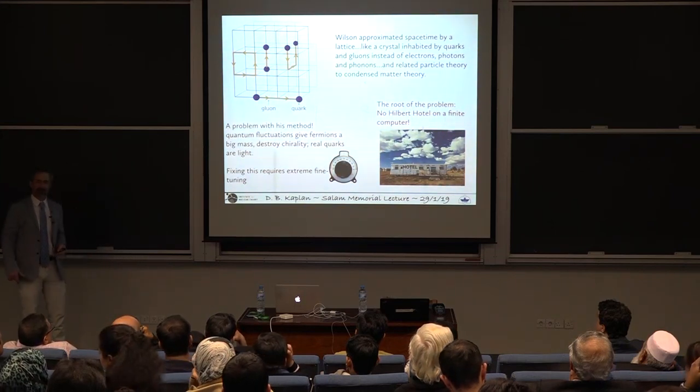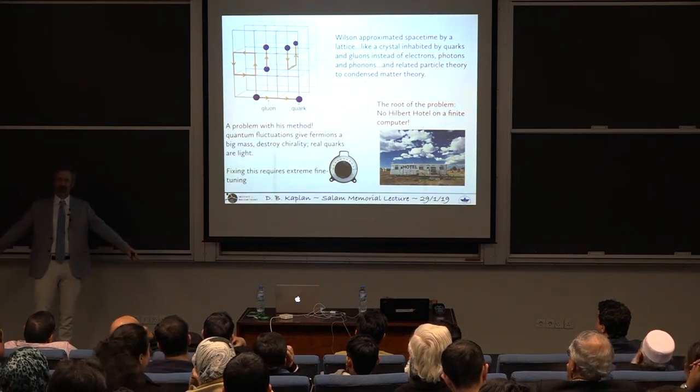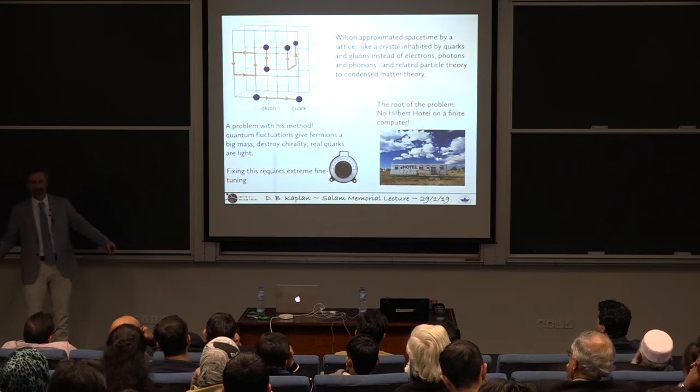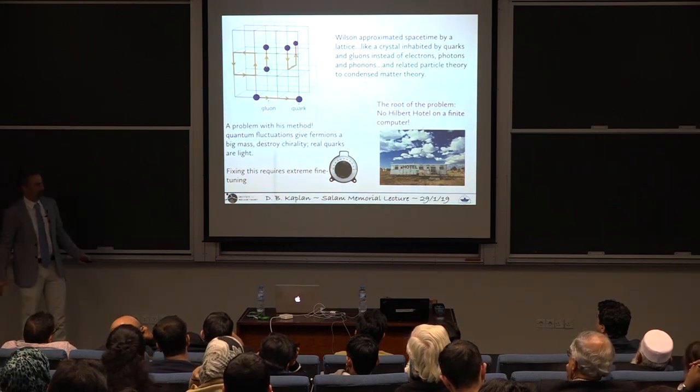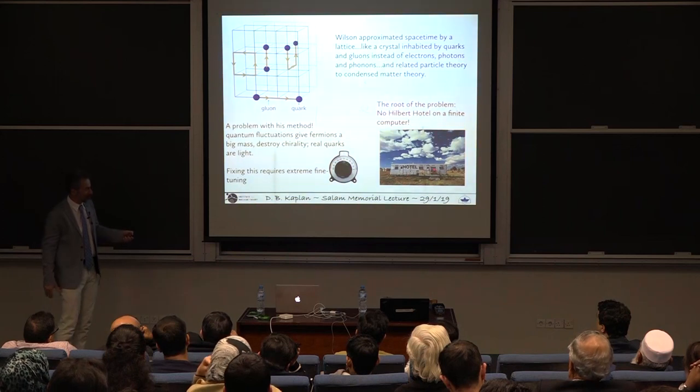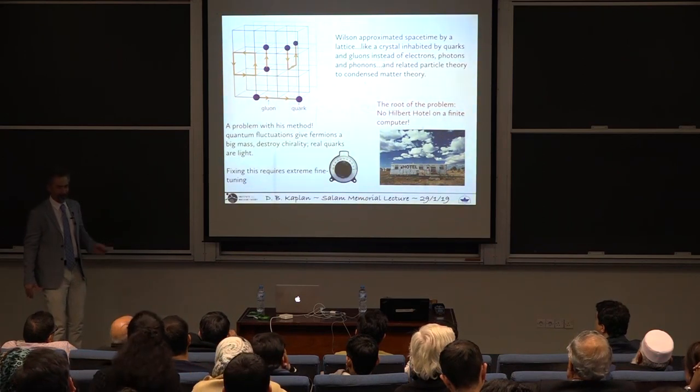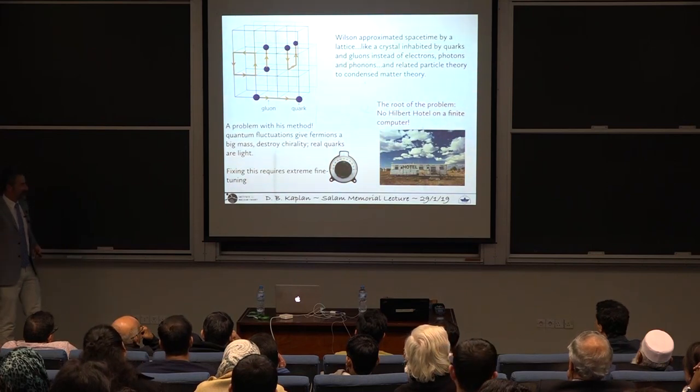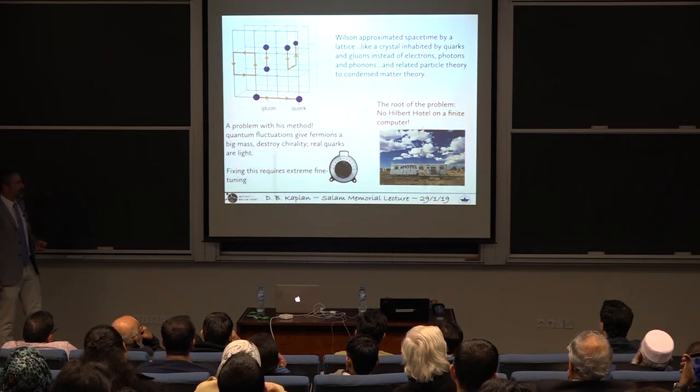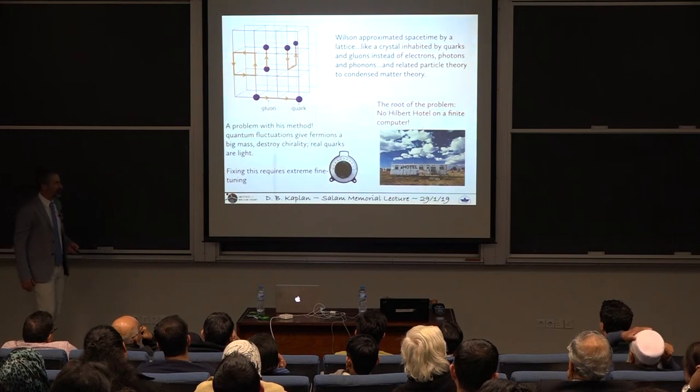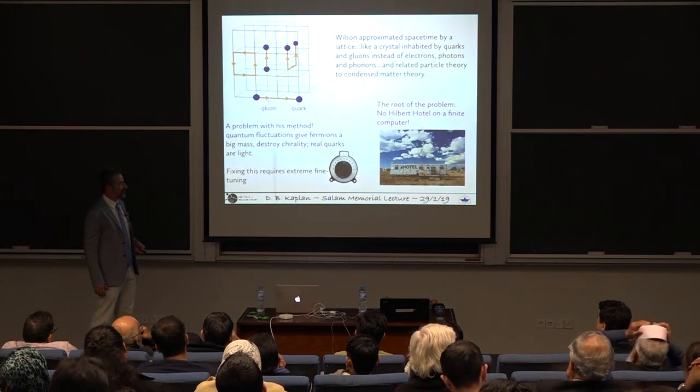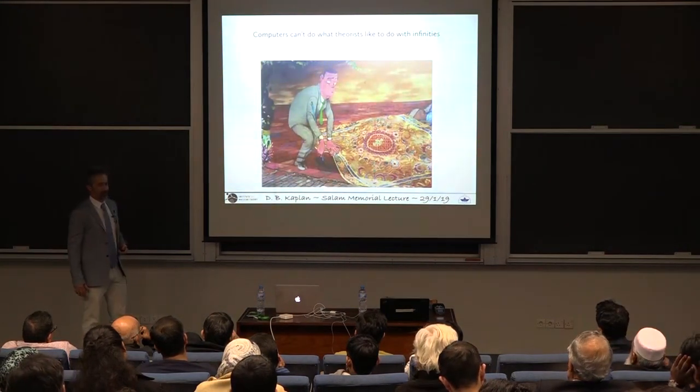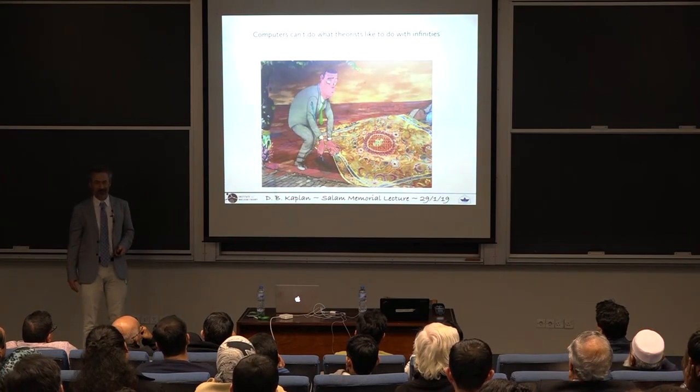And in fact, he made a very strong analogy between relativistic quantum field theory with quarks and gluons to ordinary condensed matter physics with electrons and phonons. But one problem with this theory was that the quarks in this theory, you might try to set it up so that they're light. You need to have the quarks be very light compared to the scale of the crystal to describe reality. But you found that the quantum fluctuations destroyed them. They'd become very heavy. And you had to fine-tune the parameters of your theory to extraordinary precision in order to keep the quarks light. So it really is a problem with the theory that persisted for a couple decades, and people didn't know how to solve this. The problem really can be traced back to this Hilbert Hotel.